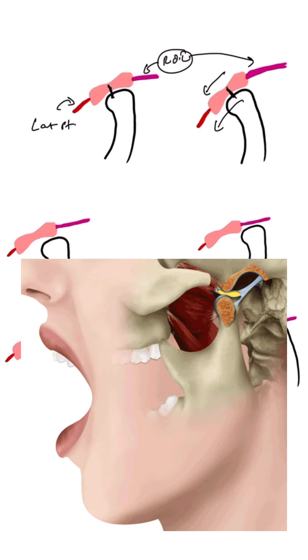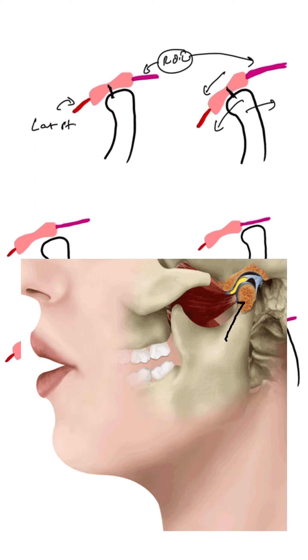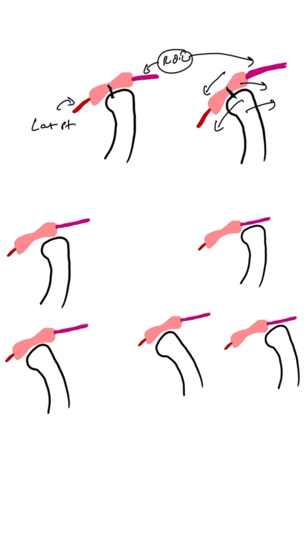The posterior part — the retrodiscal lamina — is elastic, and it comes along with the disc. Whenever the patient closes, the disc will again go back as per the elasticity of this retrodiscal lamina.